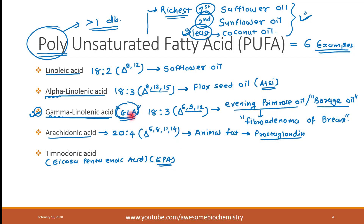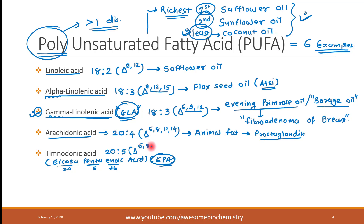The next example is timnodonic acid, also known as icosapentaenoic acid (EPA). 'Icosa' means 20, 'penta' means 5, and 'enoic' means double bond — so it is a 20-carbon long compound with 5 double bonds, written as 20:5. The locations of all five double bonds are delta 5, 8, 11, 14, and 17.